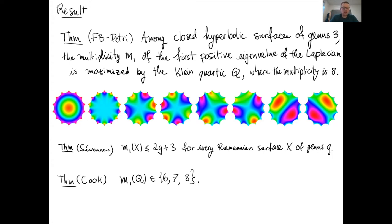What is the Klein quartic? It's maybe best known for being the smallest Hurwitz surface, which is a hyperbolic surface whose isometry group has size equal to 84 times the genus minus one, which is the largest possible.